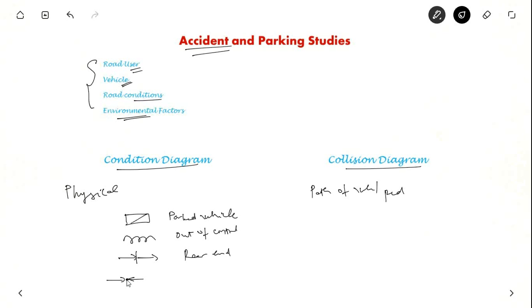And this is front end collision. And in this, if you represent a dot like this, then it is a fatal collision. But if you represent a dot without filling it in, then only injury has taken place. So these are the major symbols to represent the collision diagram.